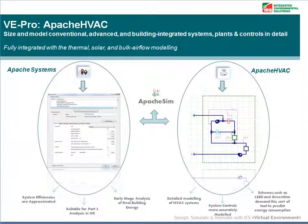There are two ways to represent your systems in the Virtual Environment Pro software. One is located in the Apache View interface and is called Apache Systems. The other is the Apache HVAC module, which is fully integrated into the Apache Sim module.